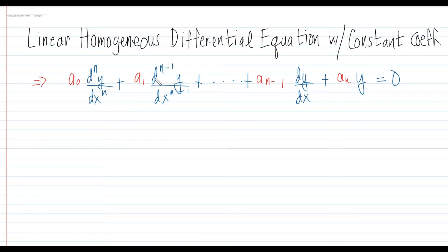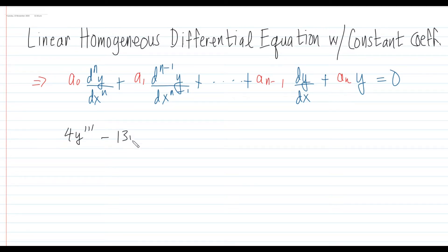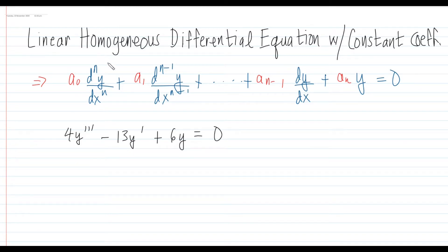So a sub 0, a sub 1, a sub n minus 1, and a sub n are all constants. An example of that can be written as: 4y triple prime minus 13y prime plus 6y is equal to 0. This is an example of a linear homogeneous differential equation with constant coefficients.